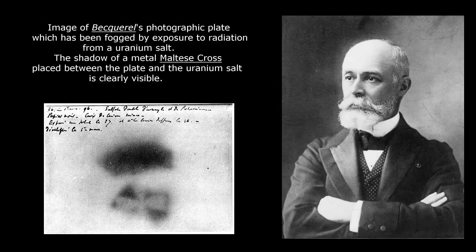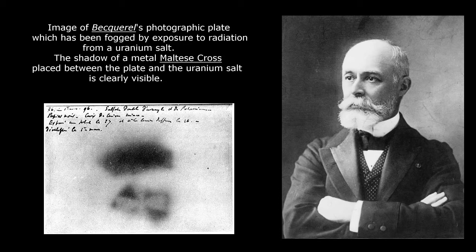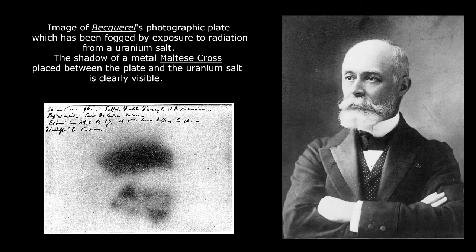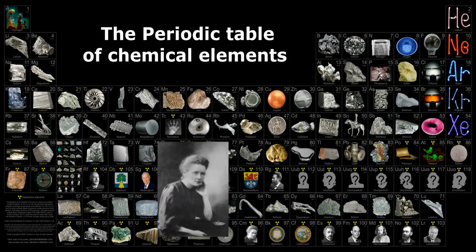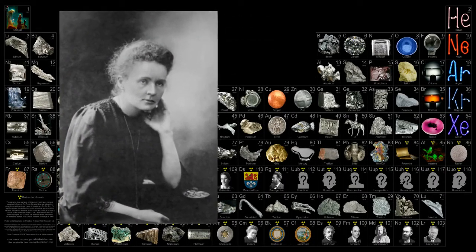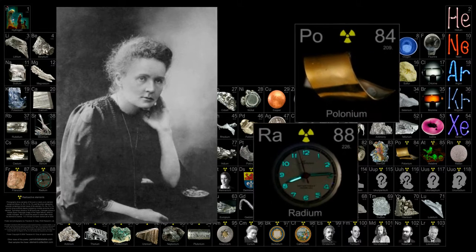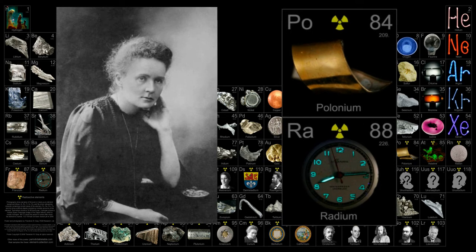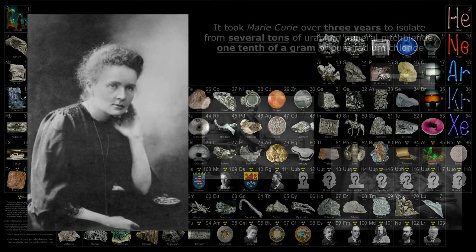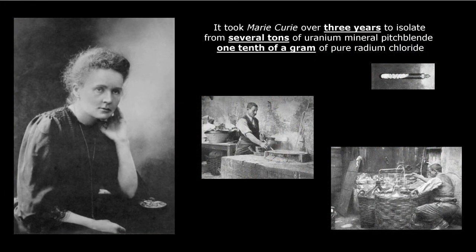During further investigation in this direction, Becquerel discovered a new natural source of radiation. The nature of this radiation was not understood, but the source of these rays was identified. This was uranium. Titanic work of Marie Curie allowed finding some more chemical substances, namely two new chemical elements polonium and radium, which were sources of radiation. It took Marie Curie over three years to isolate from several tons of uranium mineral pitch blend one-tenth of a gram of radium chloride.